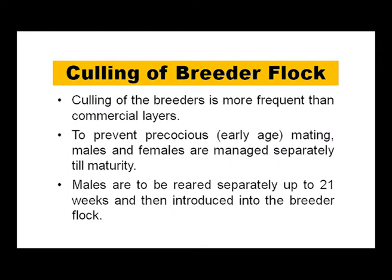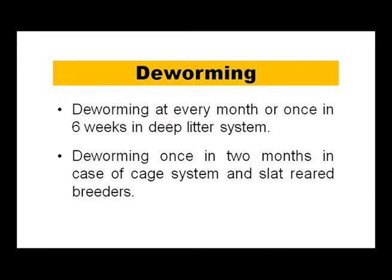Culling of breeders is more frequent than in commercial layers. To prevent precocious early-age mating, males and females are managed separately; males are reared separately up to 21 weeks of age and then introduced into the breeder flock. Deworming is a regular management program to control coccidia and parasitic infestations, carried out every month or once every 6 weeks.